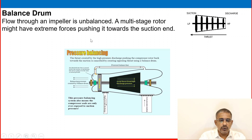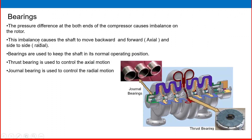The balance drum: because flow through an impeller is unbalanced, a multi-stage rotor might have extreme forces pushing towards the suction end. A balancing lane is present on both the suction and discharge sides to maintain equal pressure. The pressure difference at both ends of the compressor causes imbalance on the rotor, causing the shaft to move axially (backward and forward) and radially (side to side). Bearings are used to keep the shaft in its normal operating position — thrust bearings control axial motion and general bearings control radial motion.